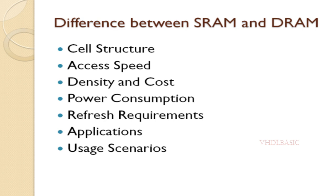Density and cost: SRAM cells are larger and more complex, requiring multiple transistors. This reduces the density of memory chips and makes them more expensive to manufacture. DRAM cells are smaller and simpler, allowing for higher density memory chips at a lower cost per bit. Power consumption: SRAM generally consumes more power than DRAM due to its larger cell size and more complex circuitry. DRAM is more power efficient than SRAM, making it suitable for devices with power constraints.